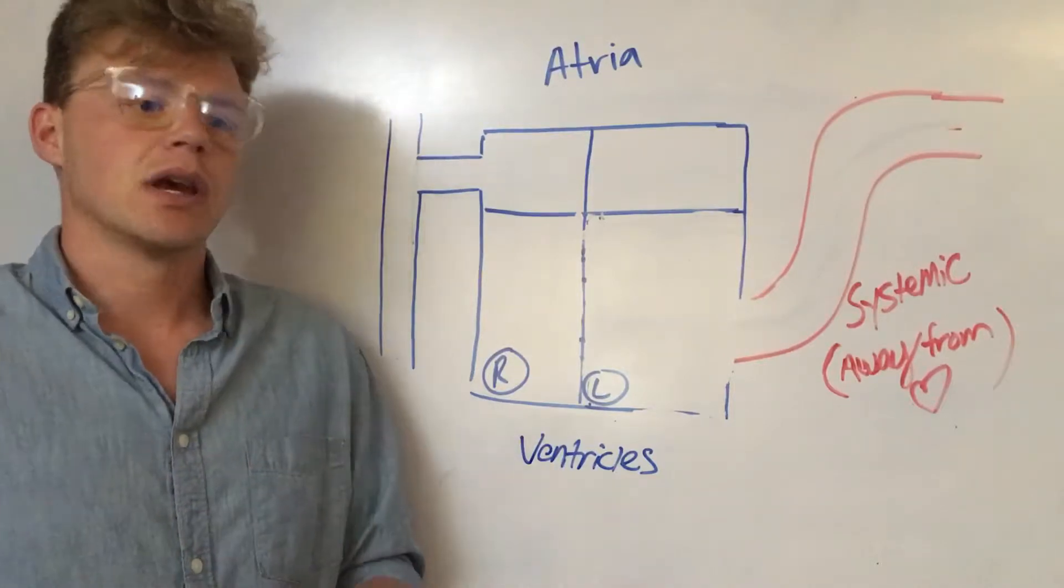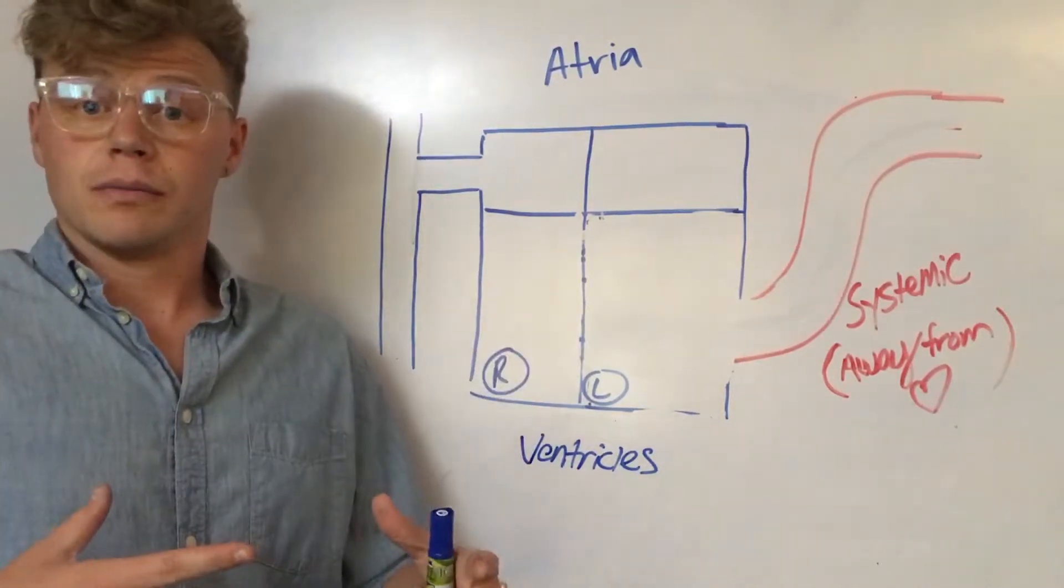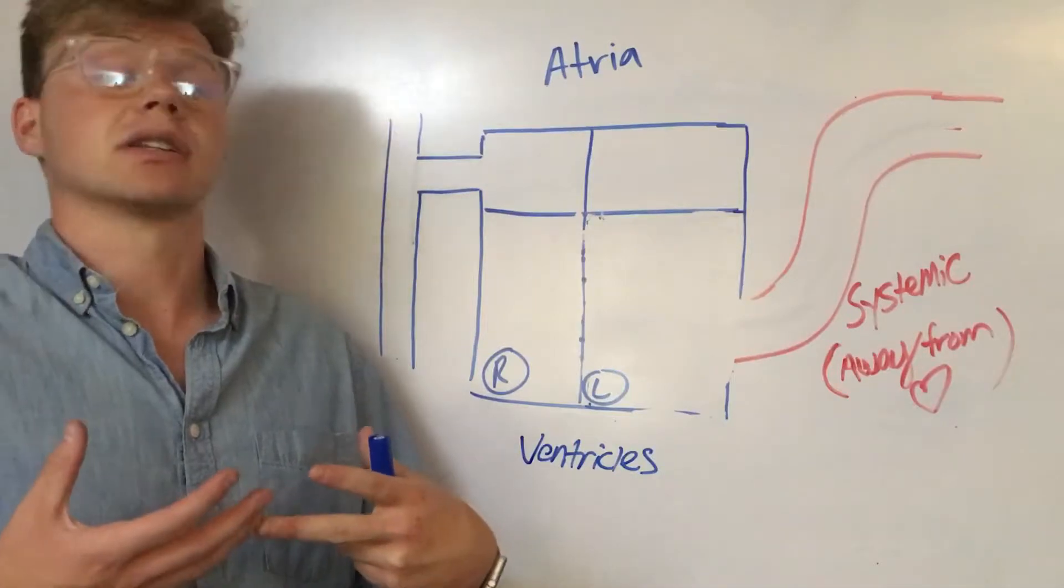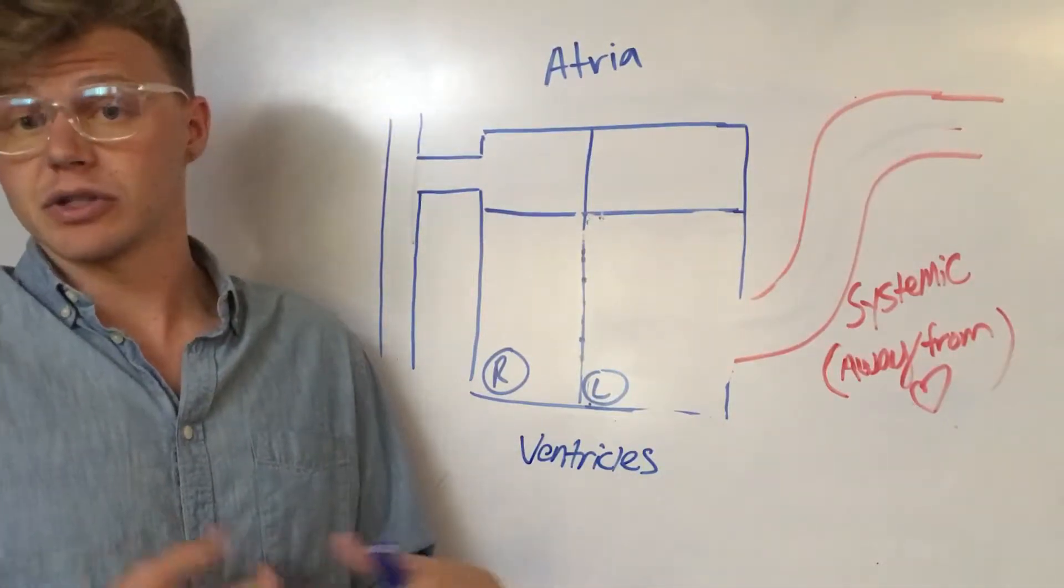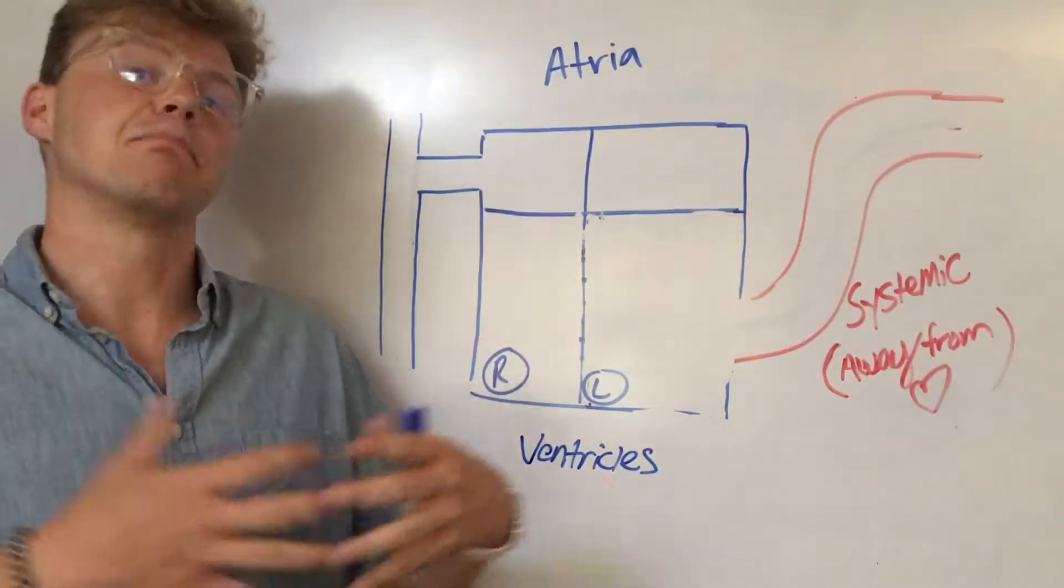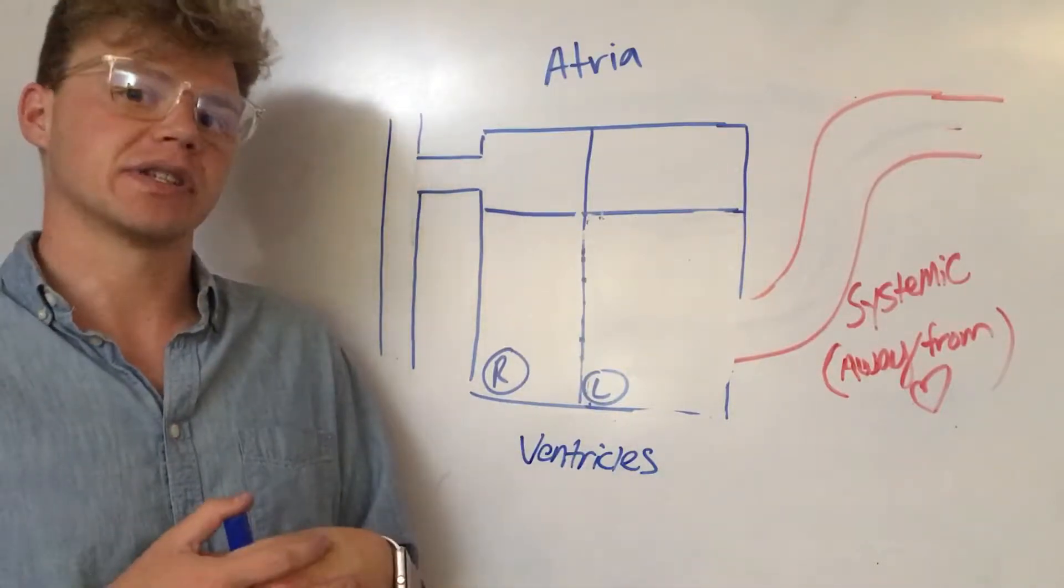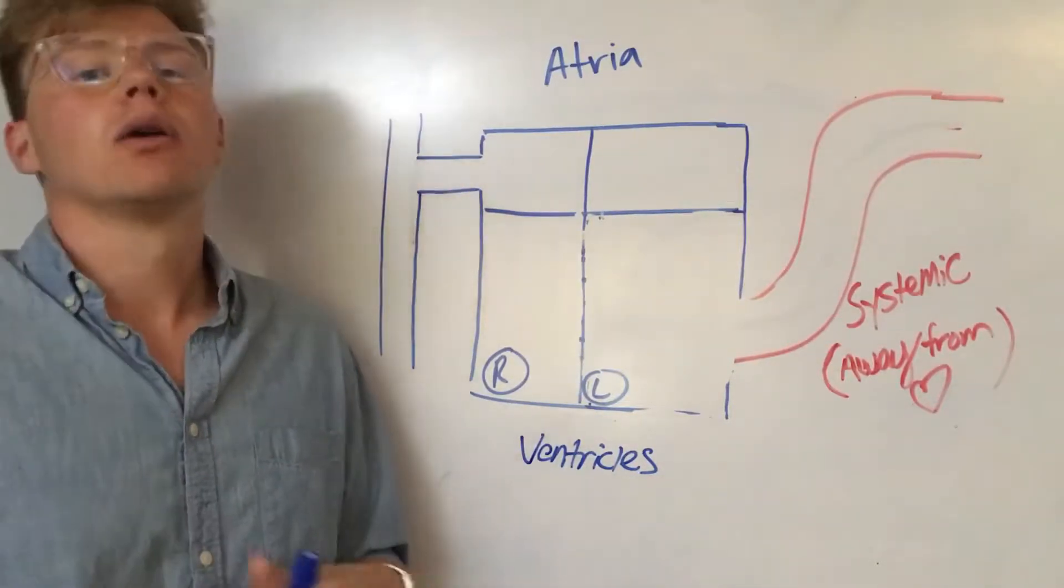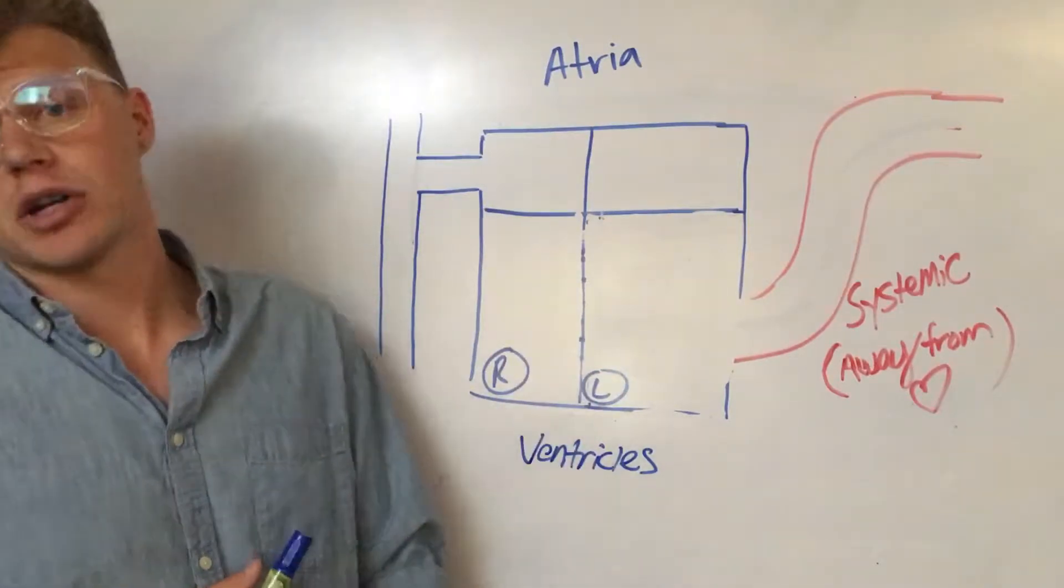That basically means your left ventricle, which is the part of your heart that pumps against the highest pressure throughout your body, your systemic pressure, gets bigger. One of the consequences is it gets bigger when you have uncontrolled systemic high blood pressure.